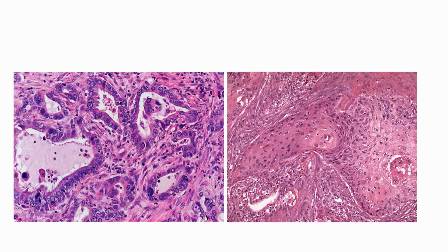In resection specimens, features of glandular differentiation or squamous differentiation are usually readily identified, but in poorly differentiated tumors or small biopsies, these morphological features may not be apparent. In these cases, panels of antibodies have been used to identify histological subtypes.